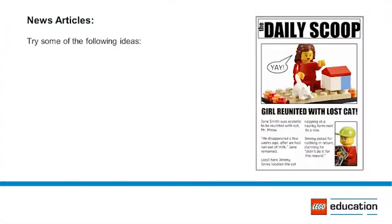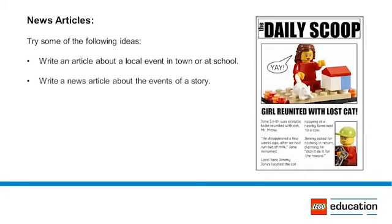Try some of the following ideas: Have your students write an article about a local event in their town or at their school. Ask students to convert the event in a story into a newspaper article or a comic by having each panel represent the who, what, where, when, why, and how of a story.